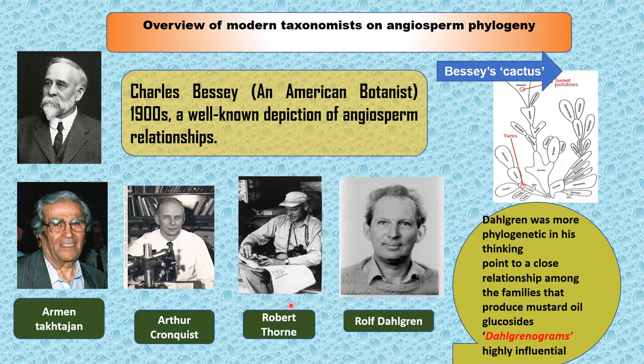Robert Thorne proposed a pure phylogenetic system of classification based on comparative morphology, cytology, embryology, paleobotany, plant geography, pollen and seed morphology, ultrastructure, and host-parasite relationships. He believed in the monophyletic origin of angiosperms, treating flowering plants at the rank of class with an initial bifurcation into two subclasses — Dicotyledonae and Monocotyledonae — further subdivided into 28 superorders, 54 orders, 73 suborders, 350 families, 12,255 genera, and 225,490 species.